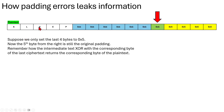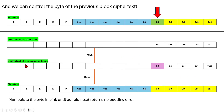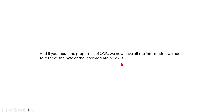How do padding byte errors leak information? Suppose we only set the last 4 bytes to 0x5. The 5th byte from the right is still the original padding. The intermediate text XOR'd with the corresponding byte of the last ciphertext returns the corresponding byte of the plaintext. So we can brute force that byte — try random values until this one returns no padding error, meaning that byte is 0x5, matching the rest of the padding. Once we manipulate the byte until no padding error occurs, we have all the information we need to retrieve the intermediate block byte using XOR properties.